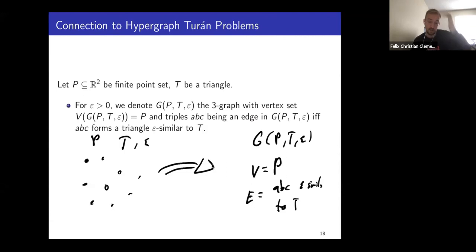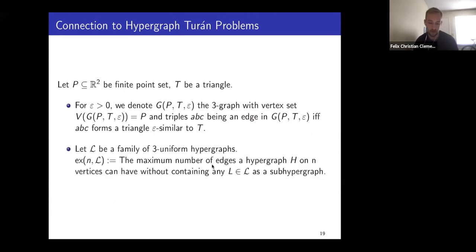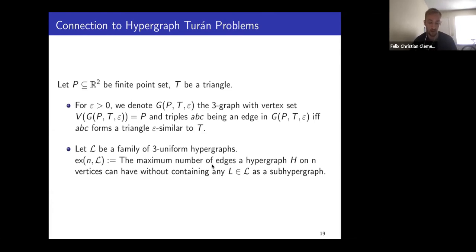This auxiliary hypergraph depends on the point set, the triangle shape, and ε, and every ε-similar triangle becomes an edge. So we can now focus on counting edges in the hypergraph instead of counting triangles. The next observation is that it seems unlikely this auxiliary hypergraph can have large cliques — having a large clique would mean many points where every triple is an ε-similar triangle, which turns out to be impossible if the clique is too large. This brings us to hypergraph Turán theory.